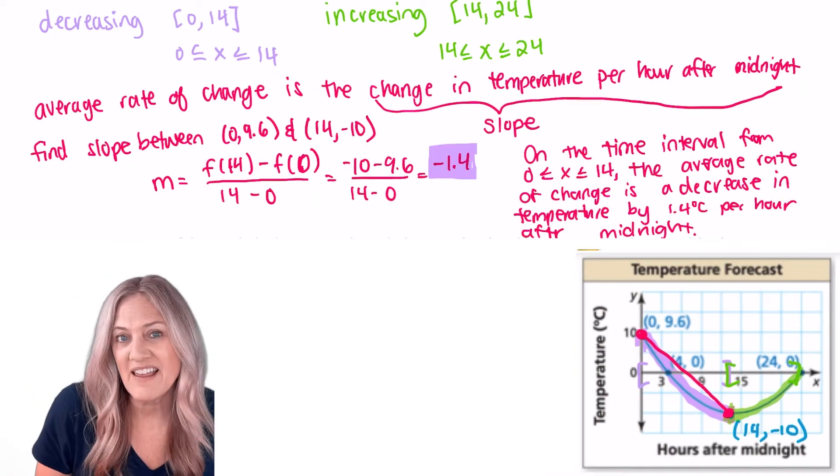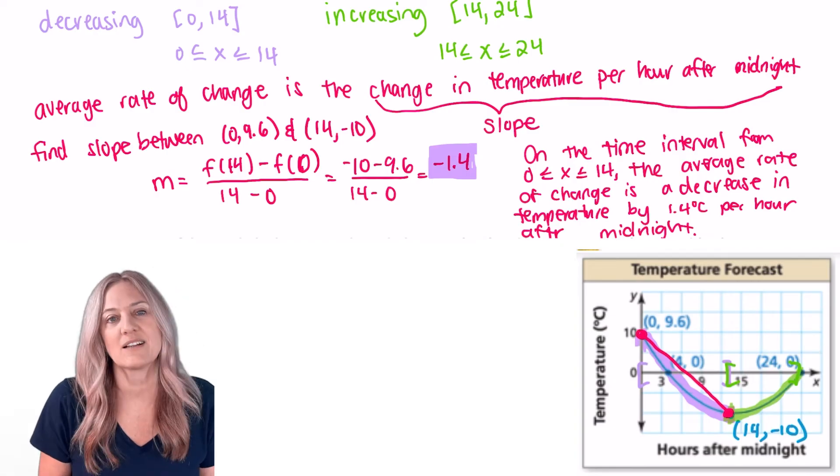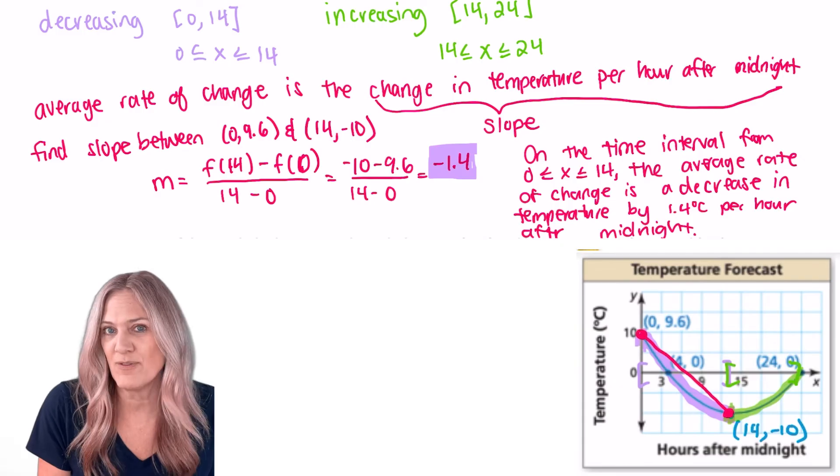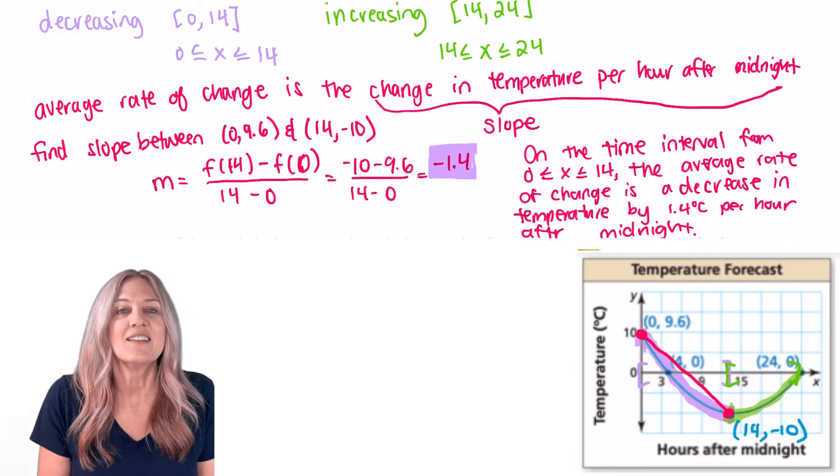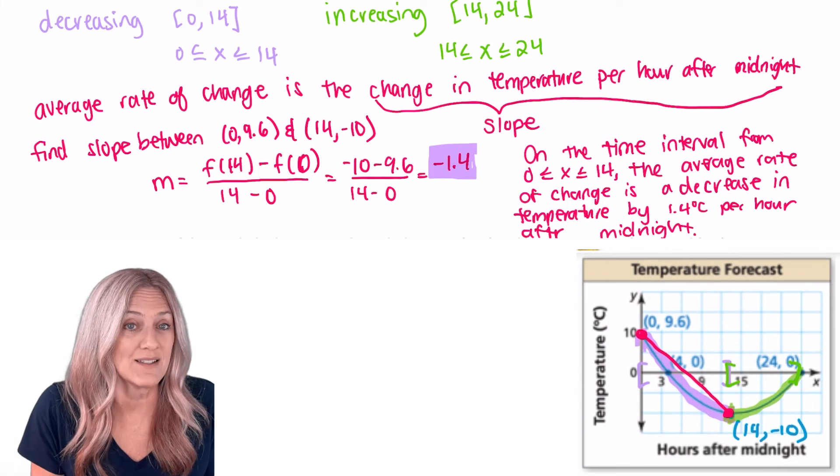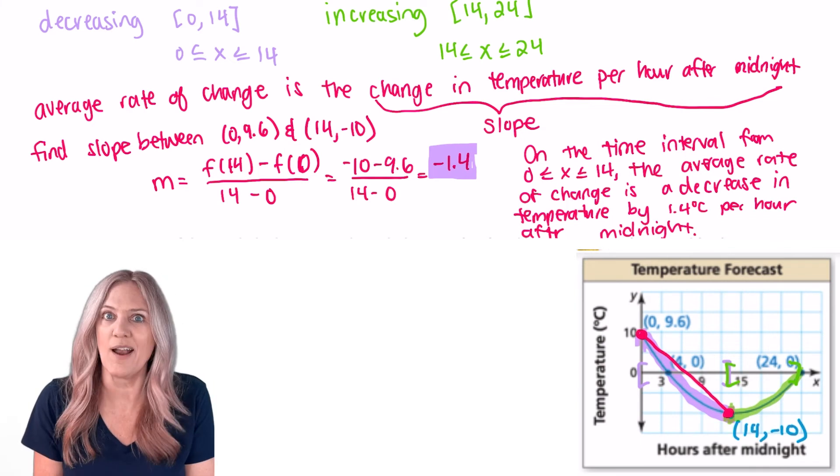So what does this average rate of change of negative 1.4 mean in context of this situation? Well, on that time interval from 0 to 14 hours after midnight, the temperature decreases 1.4 degrees Celsius per hour after midnight.